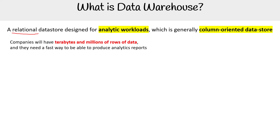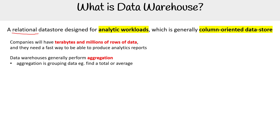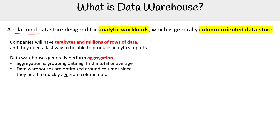Companies will have terabytes and millions of rows of data and they need a fast way to be able to produce analytic reports — that's how you know you need a data warehouse. Data warehouses generally perform aggregations, which is the grouping of data to find a total or average. Data warehouses are optimized around columns since they need to quickly aggregate column data.